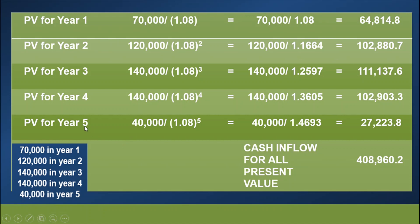And for year 5, there will be 40,000 pesos. We use the formula divided by 1.08 raised to the power of 5. 5 here is our year 5 or our N. We simplify 1.08 raised to the power of 5, which gives us 1.4693. And then 40,000 divided by 1.4693 gives us 27,223.80. That is our step 1. When we sum up all of this amount, we arrive at 408,960.2.